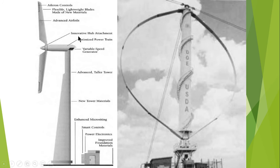The drivetrain or power train of a wind turbine is composed of the gearbox, generator, and other necessary components needed to produce electricity. The gearbox connects the low-speed shaft attached to the turbine blade to the high-speed shaft attached to the generator.